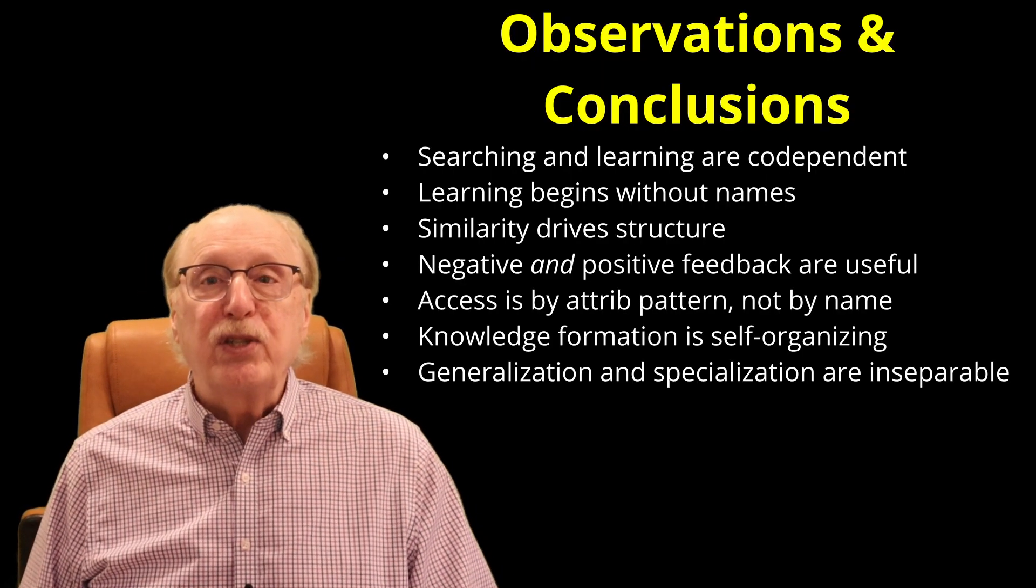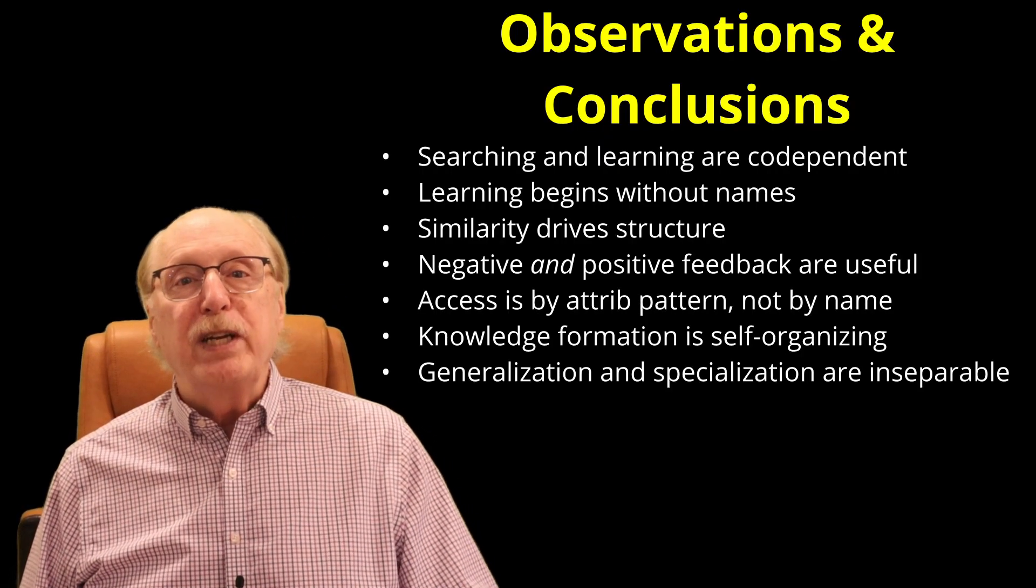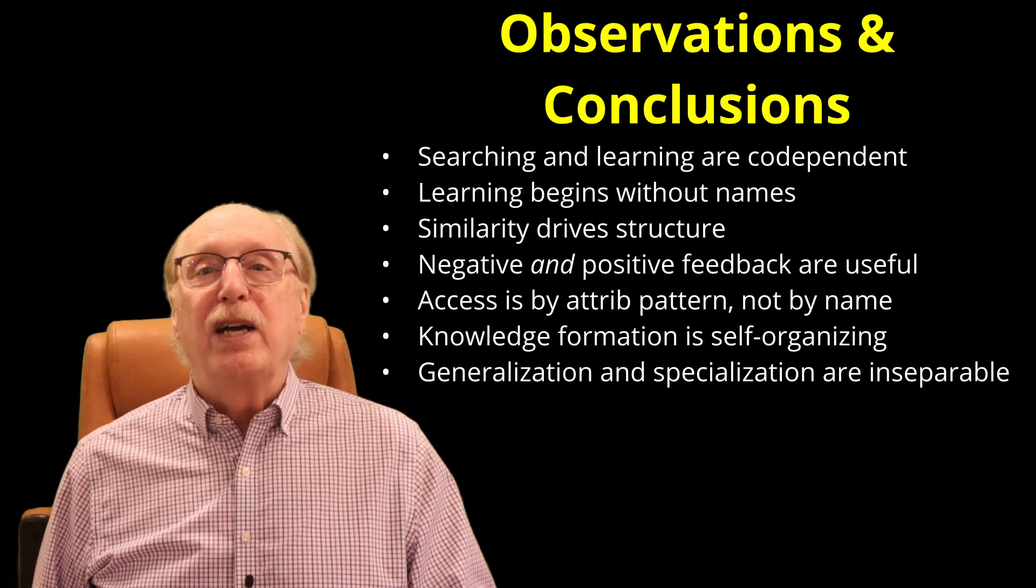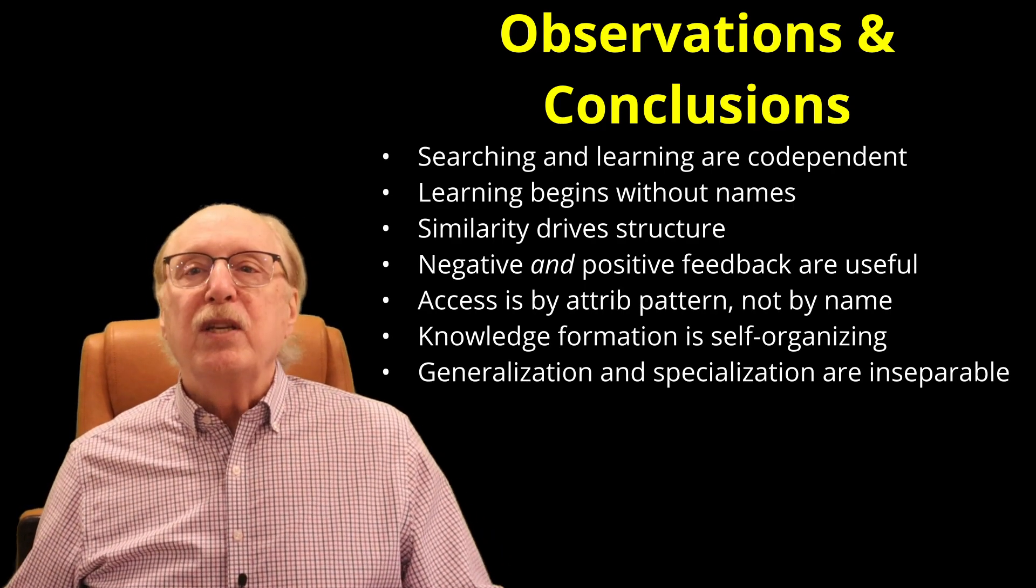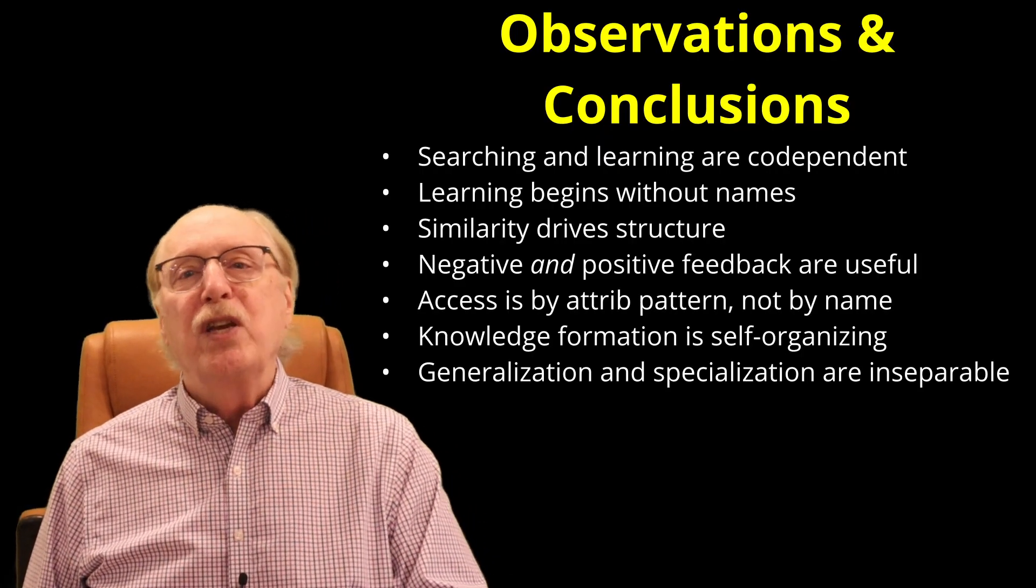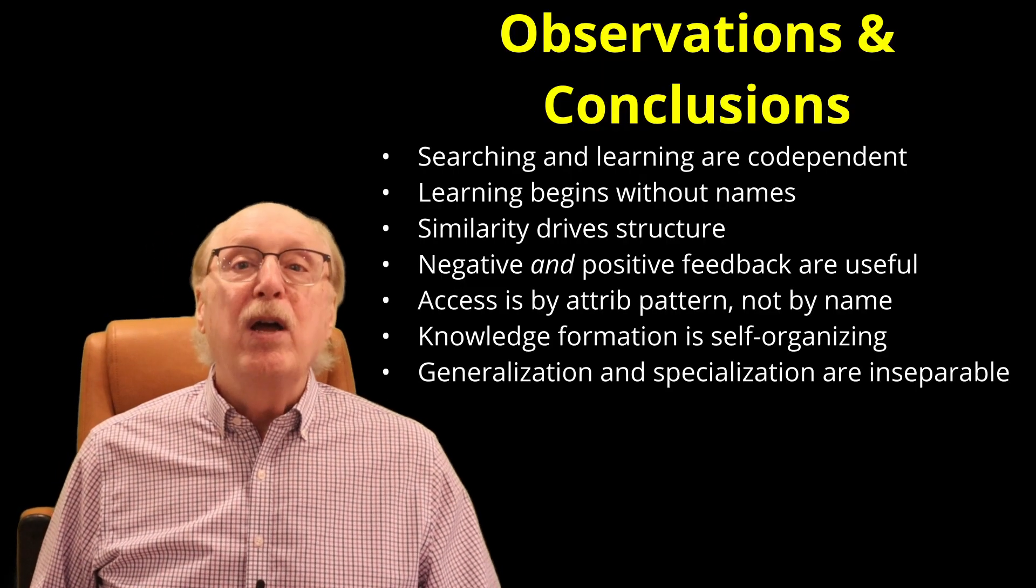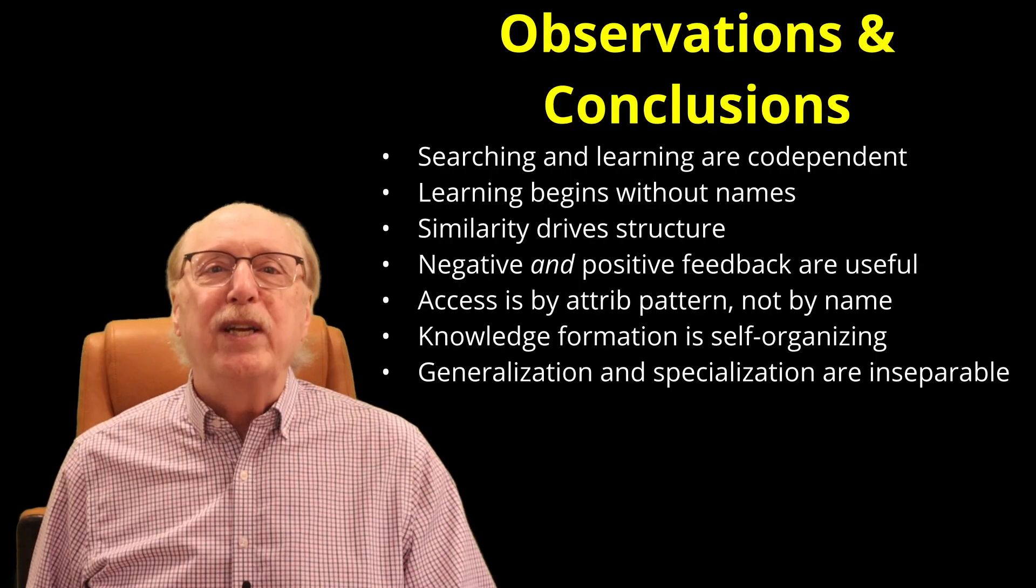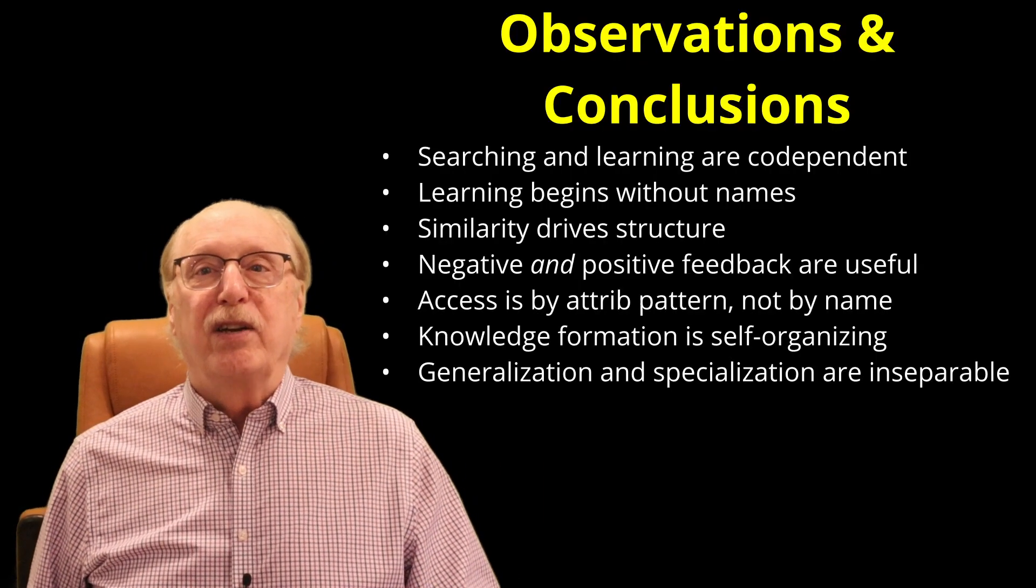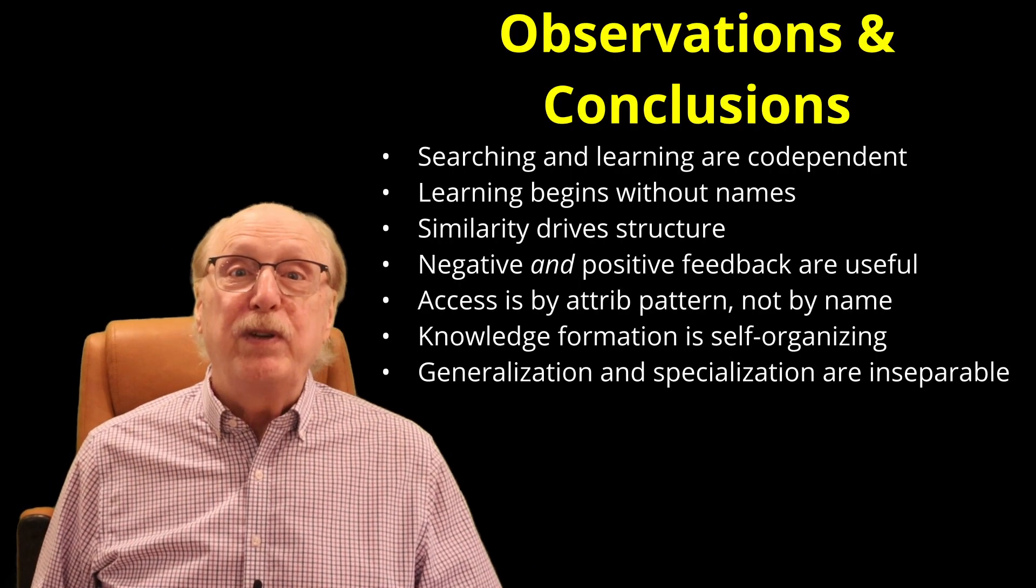Generalization and specialization are inseparable. Every time the system differentiates one instance from another, it simultaneously strengthens the concepts that they share. This stems from the fact that you can only directly sense instances of things, not general categories. While you can comprehend the general concept of a dog, when you see one, you are always seeing a specific instance of a dog. It always has some unique characteristics, even if that uniqueness is only its position in your visual field.